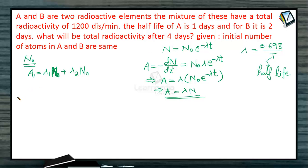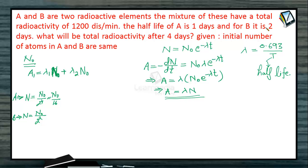After 4 days, for element A with a half-life of 1 day, 4 half-lives have elapsed, so the number of atoms becomes N₀/2⁴ = N₀/16. For element B with a half-life of 2 days, only 2 half-lives have elapsed in 4 days, so the number of atoms becomes N₀/2² = N₀/4.